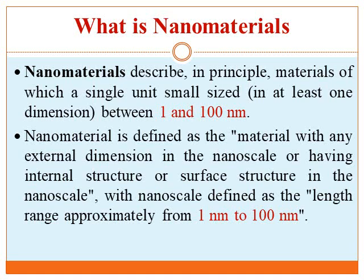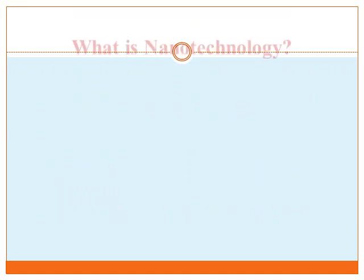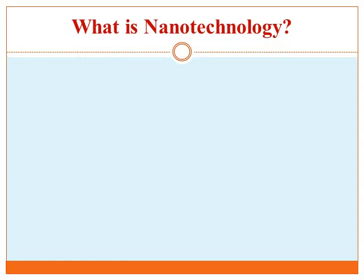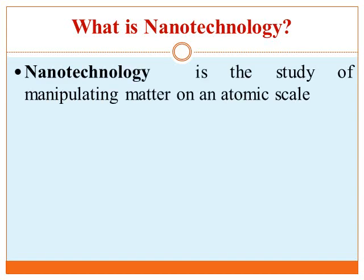Nanomaterials are defined as materials having internal structure or surface structure in the nanoscale, with the nanoscale defined as a length range approximately from 1 to 100 nanometers. Any material falling under the size class of 1 nanometer to 100 nanometers is called a nanomaterial.